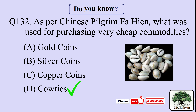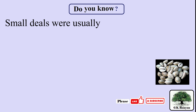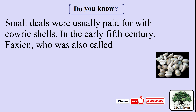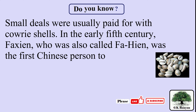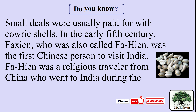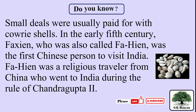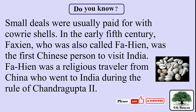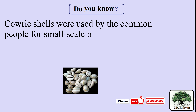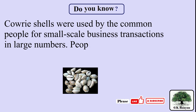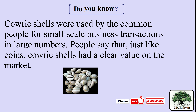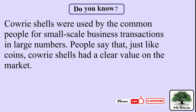The right answer is D. Cowrie shells. Small deals were usually paid for with cowrie shells. In the early 5th century, Faxian, who was also called Fayan, was the first Chinese person to visit India. Faxian was a religious traveler from China who went to India during the rule of Chandragupta II. Cowrie shells were used by common people for small-scale business transactions, and just like coins, cowrie shells had a clear value on the market.